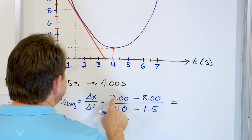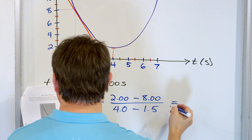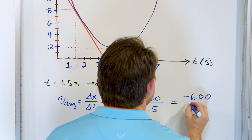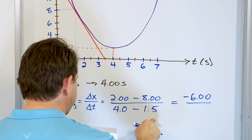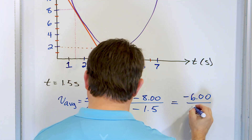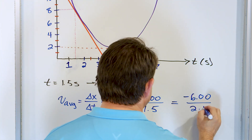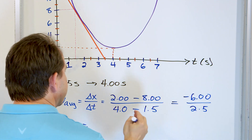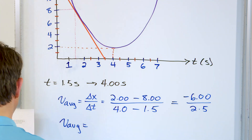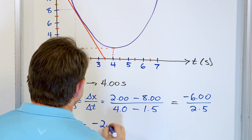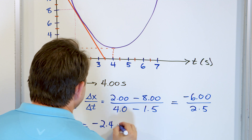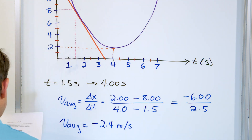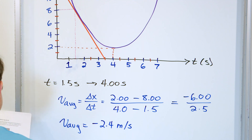We have 2 minus 8, which gives negative 6 on top, and 4 minus 1.5 gives 2.5 on the bottom. The average velocity is negative 6 divided by 2.5, which equals negative 2.4 meters per second.